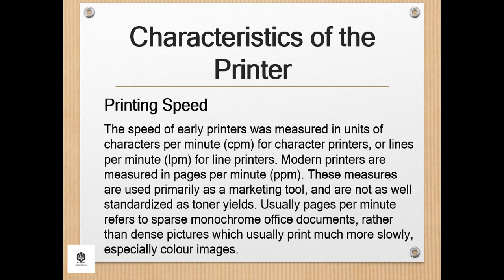Printing speed: the speed of early printers was measured in units of characters per minute (CPM) for character printers, or lines per minute (LPM) for line printers. Modern printers are measured in pages per minute (PPM). These measures are used primarily as a marketing tool. Usually, pages per minute refers to sparse monochrome office documents rather than dense pictures, which usually print much more slowly — especially color images. Speeds in PPM usually apply to A4 paper in most countries, and letter paper size, which is about 6% shorter, in North America.